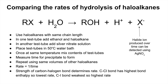You'd repeat the procedure using exactly the same volumes for your other haloalkanes and then measure the rate as one over the time. The rate is determined by the strength of the carbon-halogen bond, so we would typically compare chloroalkanes with bromo and iodoalkanes. The C-Cl bond has the highest bond enthalpy — it's the strongest — so it has the lowest rate, while the C-I bond has the lowest bond enthalpy and gives the highest rate.